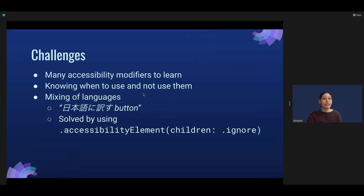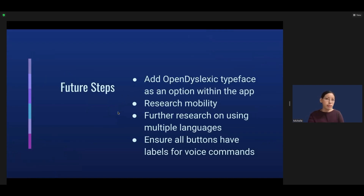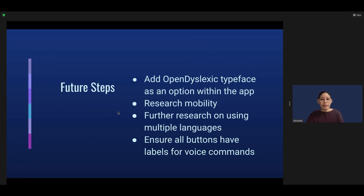Some challenges included learning the various accessibility modifiers — it takes some time to learn when to use and not to use them. I ran into some issues with the button written in Japanese that had both Japanese and English together, but by using accessibilityChildren(.ignore) I was able to solve the problem. In terms of future steps, I'm hoping to add OpenDyslexic font within the app, research more on mobility, look into allowing multiple languages for VoiceOver, and ensure all buttons have labels for voice commands.